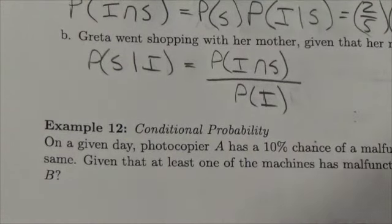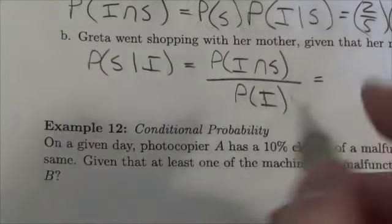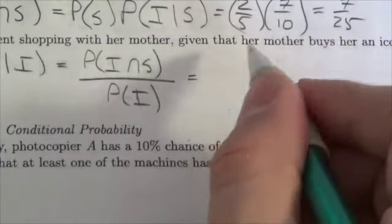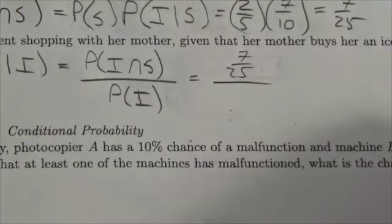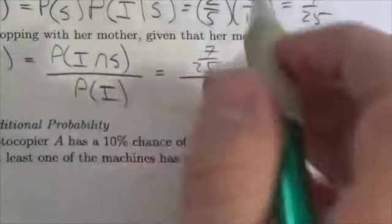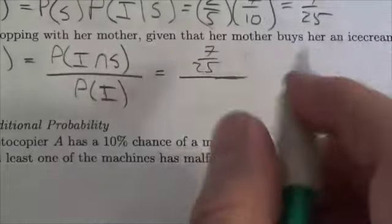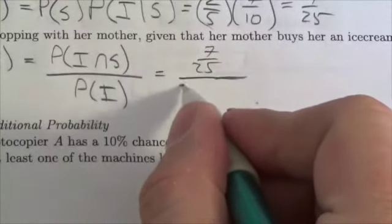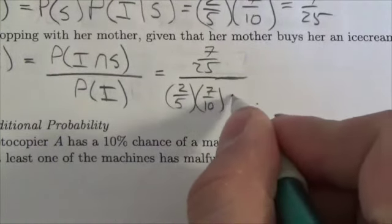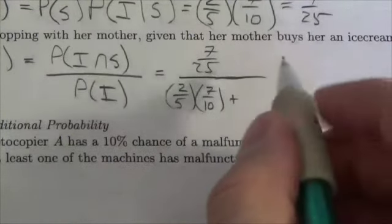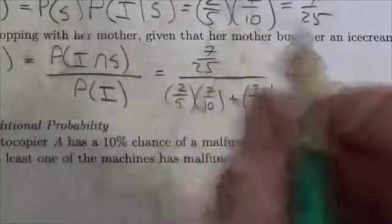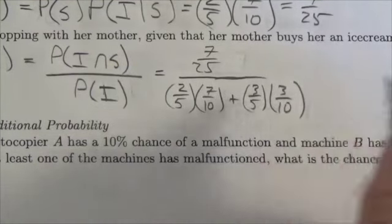We've just figured out the probability that she gets an ice cream and she's shopping — that's going to be seven-twenty-fifths. Now, what's the probability that she's getting an ice cream? There are two parts to this: either she's shopping or she's not shopping. If she's shopping, there's a probability of two-fifths that she's shopping and a seven-tenths probability that she's going to get an ice cream. Or, there is a three-fifths probability that she's not shopping and in that case, there's a 30% probability that she'll get an ice cream — so three out of ten.